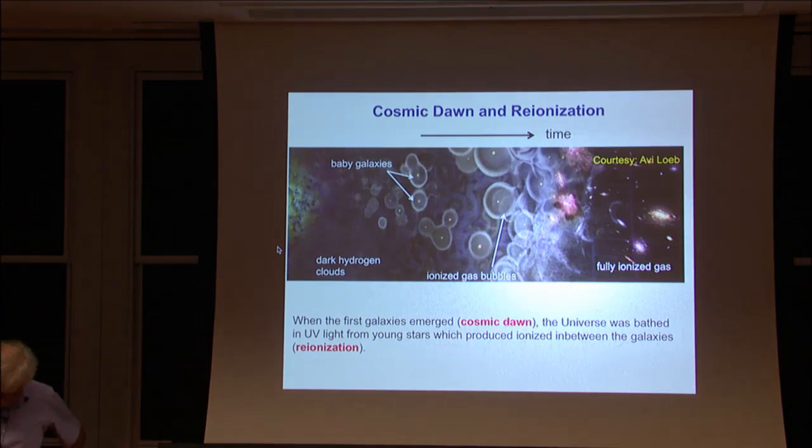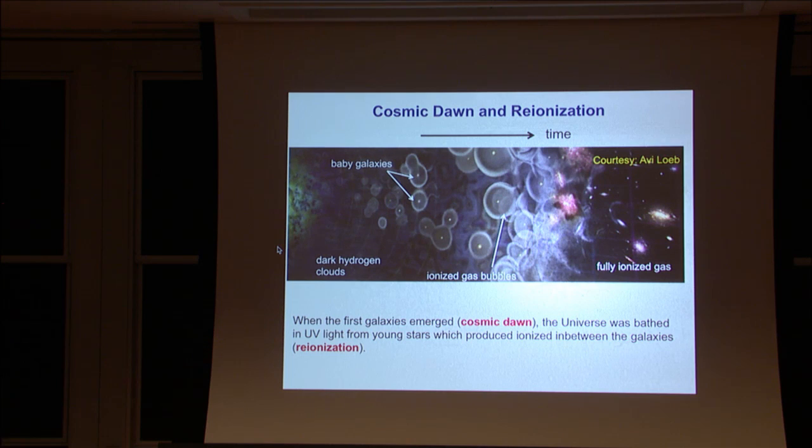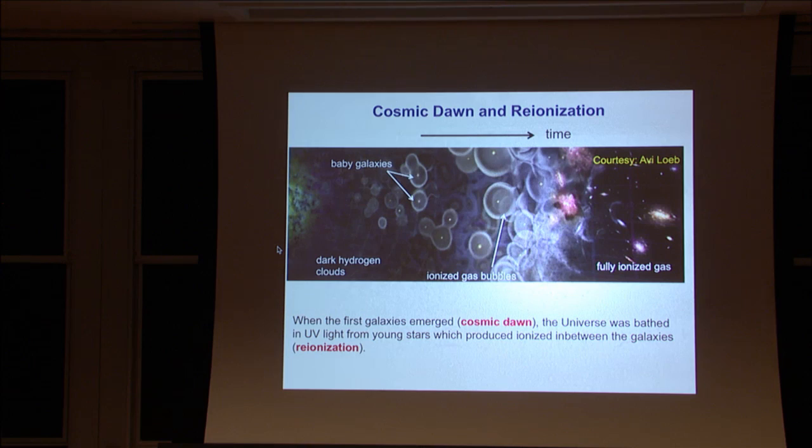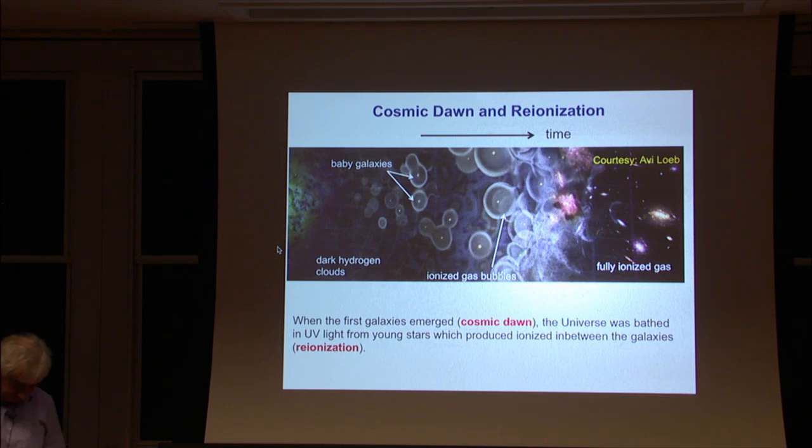So I usually start with this very nice Scientific American cartoon from Avi Loeb, which illustrates for non-experts what this subject is about. Here's the microwave background. Time is running from left to right. The hydrogen atom forms after recombination, and those hydrogen clouds are clumped under gravity through the dark matter that has fractionated out of the expansion at earlier times. The clumping of hydrogen eventually leads to over-densities which collapse and cool radiatively, and they ignite stellar nuclear fusion in the cores of these very early stellar systems.